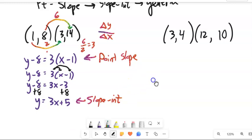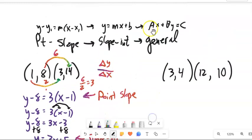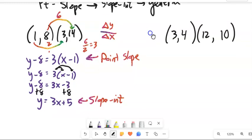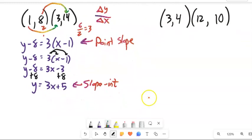Now I'm going to manipulate this into general form. Remember, general form is ax plus by equals c. x and y are on the same side, and a, b, and c are all integers. They don't have a fractional piece. So on this one, I just need to move this 3x over. I'm going to subtract 3x from both sides. I end up with negative 3x plus y equals 5. And there it is in general form.